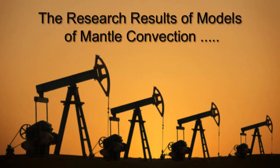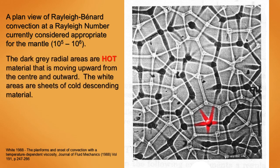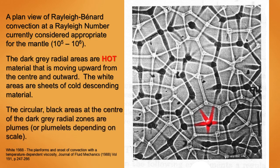Those radial patterns are a consequence of mantle convection. This is a planned view of Rayleigh-Bernard convection at a Rayleigh number currently considered appropriate for the mantle. The dark gray radial areas are hot material that is moving upward from the center and outward. The white areas are sheets of cold descending material. The circular black areas at the center of the dark gray radial zones are plumes, which are mentioned often in the geological literature.